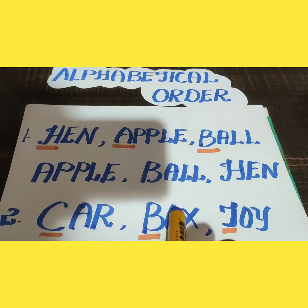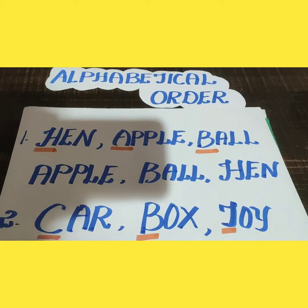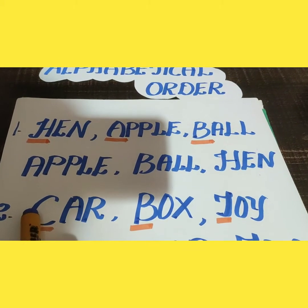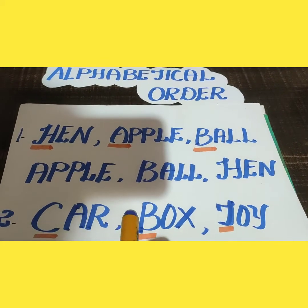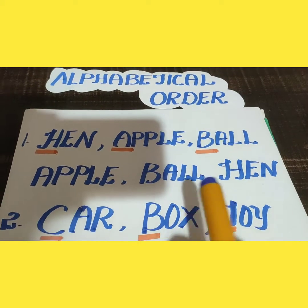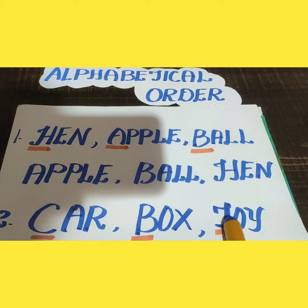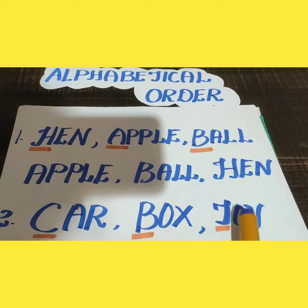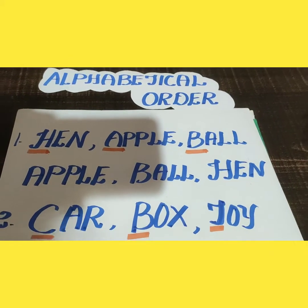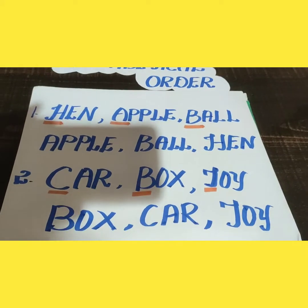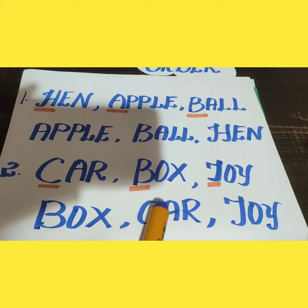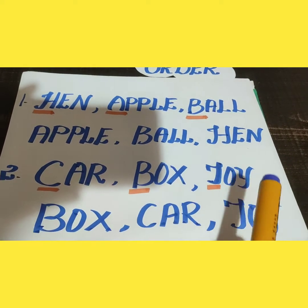Next example: car, box, toy. The first letter of car is C, the first letter of box is B, the first letter of toy is T. Now you can see the order: box, car, toy.